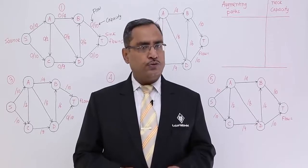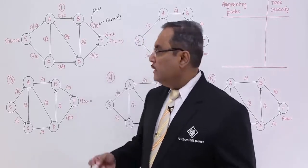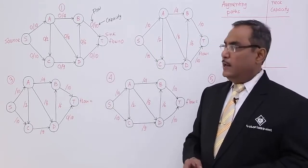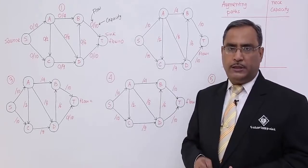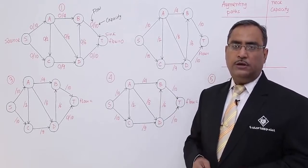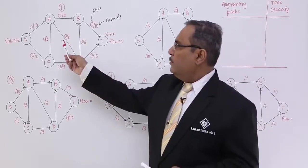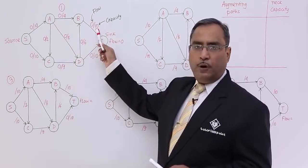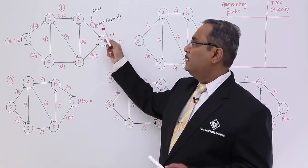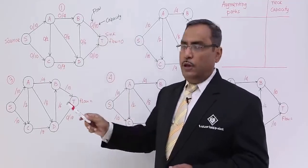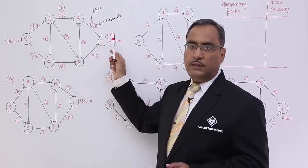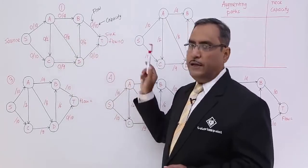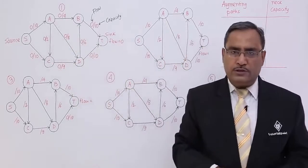We are computing the maximum flow possible through the network from source to the sink. Here the source is s and sink is t. Initially in the algorithm, we consider flow is equal to 0. We are having some integer values where the second component denotes the capacity and the first component denotes the flow. From source to sink, the flow values are 0 initially, so the net flow is 0. From here we are starting the algorithm.